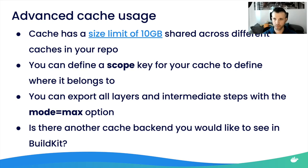There are some advanced cases worth noting. GitHub imposes a 10 GB size limit — it will save your cache but evict caches until the total size is under 10 GB; if cache is recycled too often, it results in slower run times. The scope key attribute is useful for monorepos or matrix workflows. The max-mode option exports all layers including intermediate steps, but be careful as it can quickly exceed the cache size limit. Contributions for new cache backends in BuildKit are welcome.